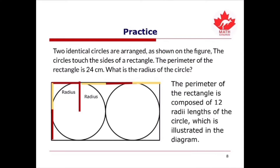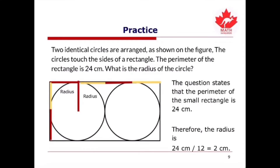As shown on the diagram, the perimeter of the rectangle is composed of 12 radii lengths of the circle. The question states that the perimeter of the rectangle is 24 centimeters. Therefore, the radius is 24 centimeters divided by 12, which is 2 centimeters.